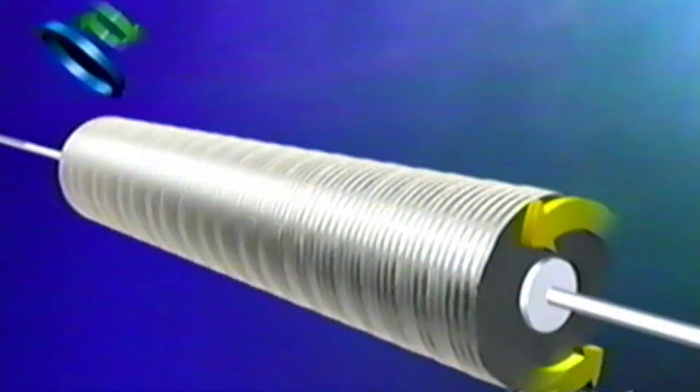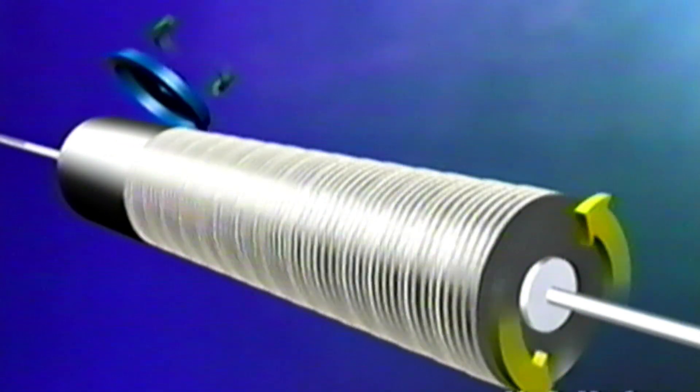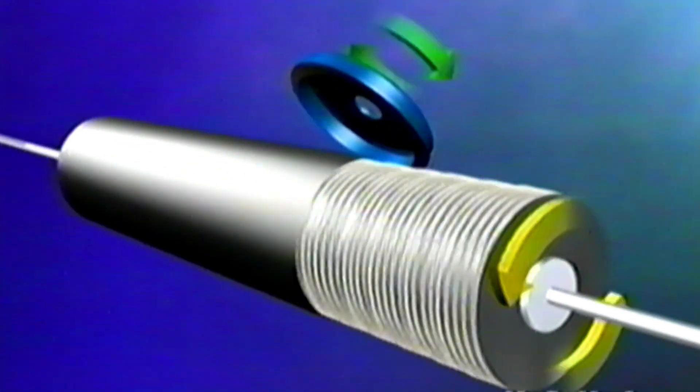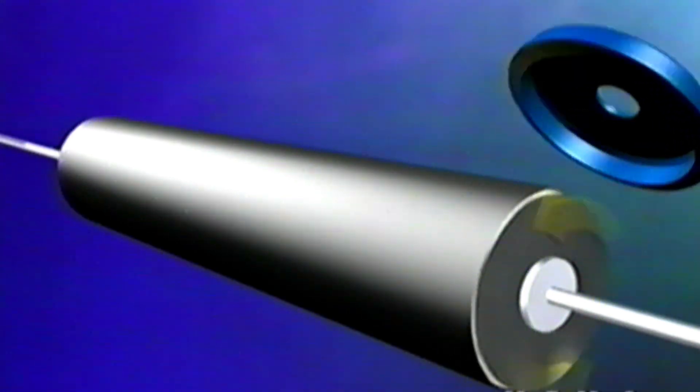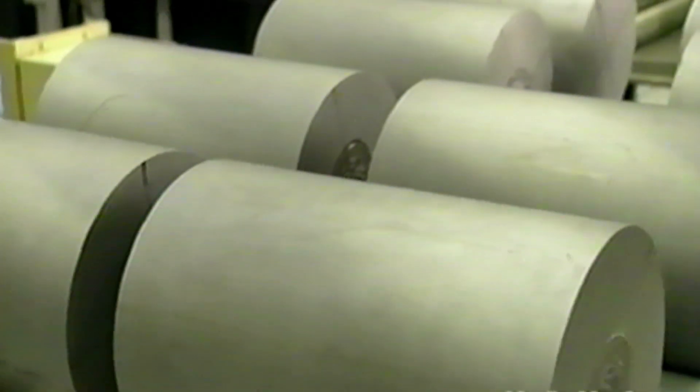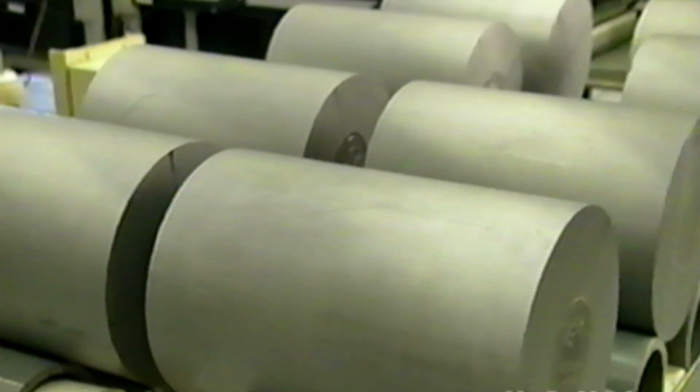Next, the ingot sections are moved to a mechanical lathe area, where they are first ground to a uniform diameter. A flat, or notch, is also added. The end result is a precisely machined section of silicon, meeting all the electrical and bulk requirements specified by the customer.